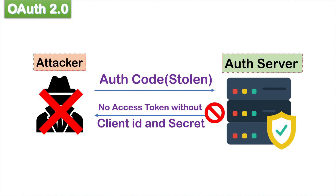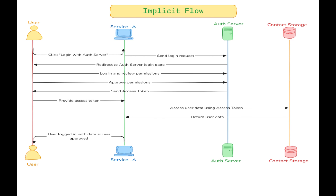The disadvantage of this extra trip is that it adds an extra step which increases response time. But this trade-off is considered worth it because the added security outweighs the minor overhead. The authorization code flow was designed with security as the highest priority, especially for sensitive data and services. Alright, let's talk about one more flow — the implicit flow.